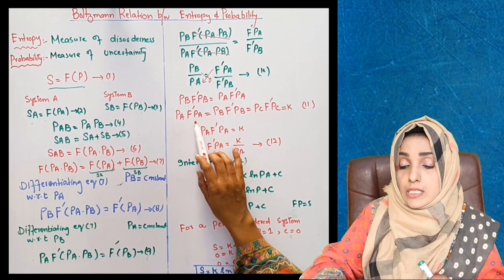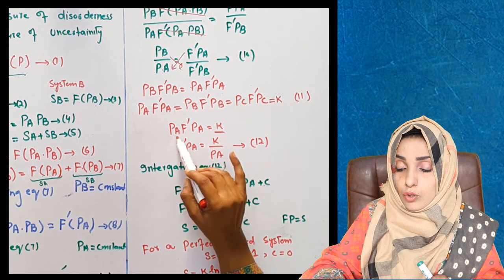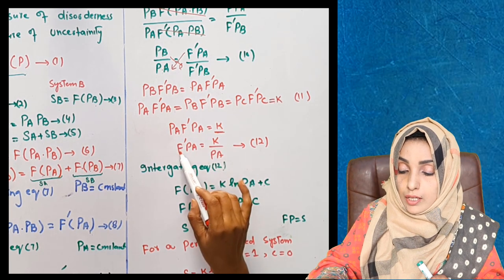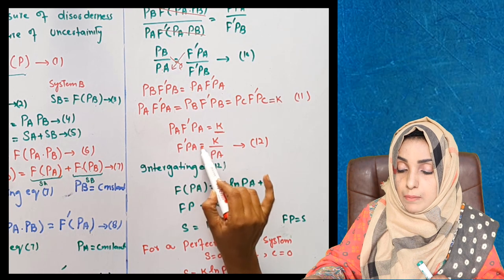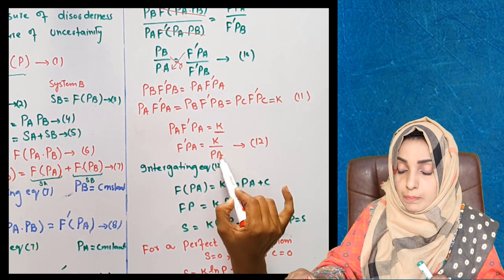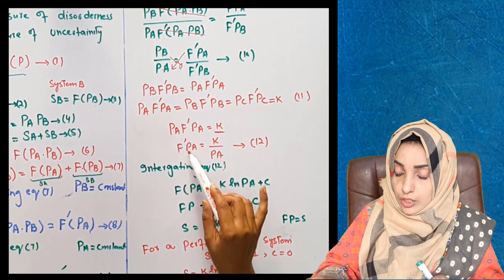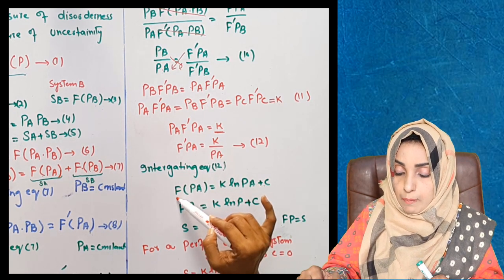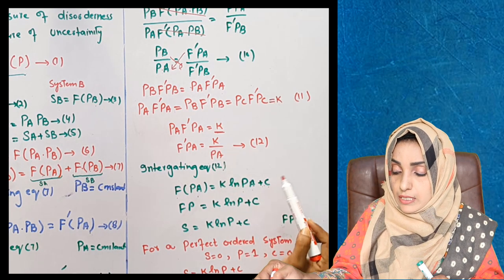So if we want to calculate the value of K for a function, for a system, we can write it this way. If we rearrange this equation, F prime P(A) is equal to K divided by P(A). If we do the integration of equation number 12, this F prime will convert to F. This will be P(A) equals K log natural P(A) plus C.